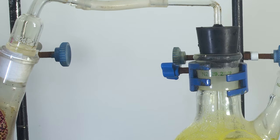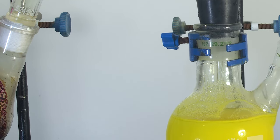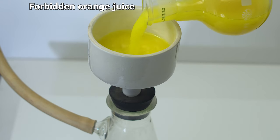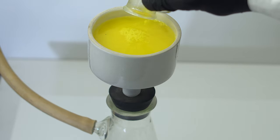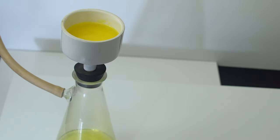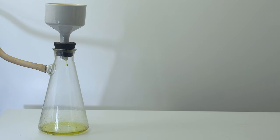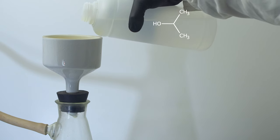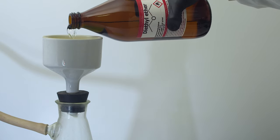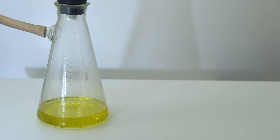After that, we bubble chlorine for another 15 minutes and filter out the precipitation. Then we wash the precipitate with isopropanol, followed by diethyl ether, and dry it in a desiccator.